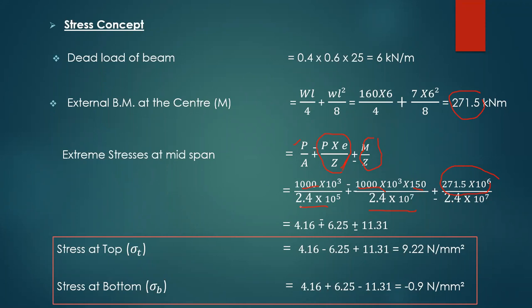After calculating all total values: direct stress is 4.16 N/mm². Due to eccentricity — tension at top, compression at bottom — the value is 6.25 N/mm². Due to bending moment — compression at top positive, tension at bottom negative — the value is 11.31 N/mm². Adding these, stress at top fibre = 9.22 N/mm² and stress at bottom fibre = −0.9 N/mm².